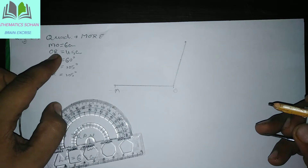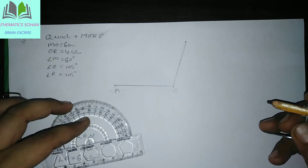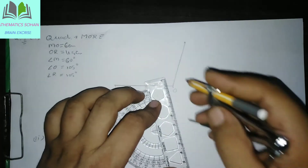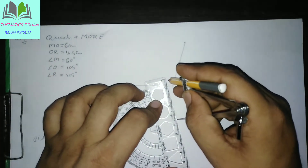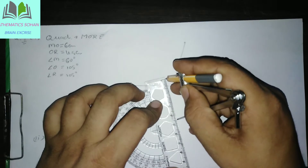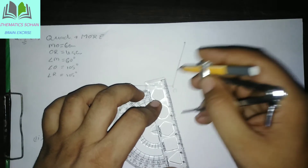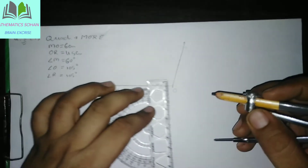Now we have 4.5 cm. Here we have 4.5 cm, here we have 4.5 cm. We draw 1 arc.